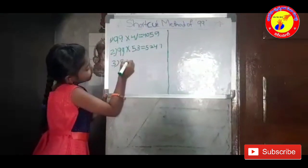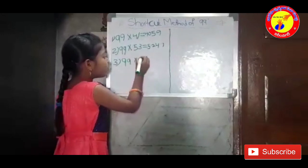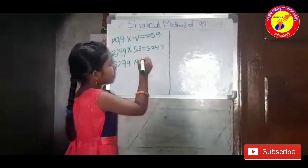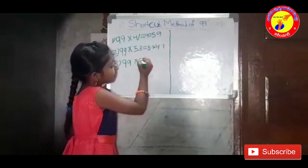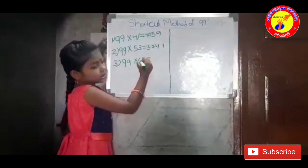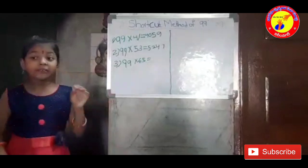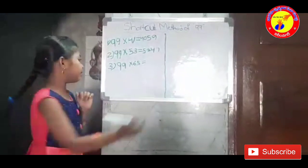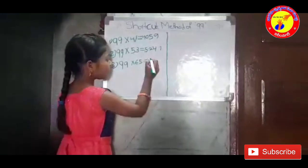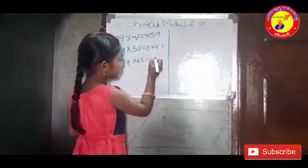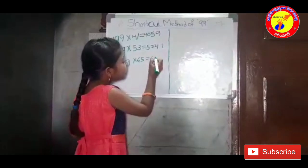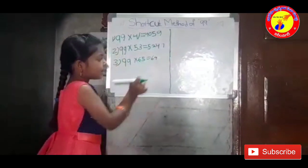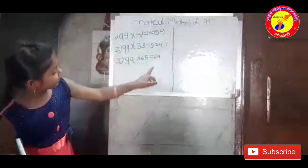99 into 65. In 65, subtract 1 — what number will come? It is 64.